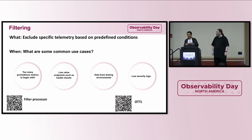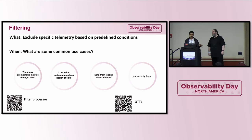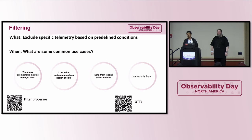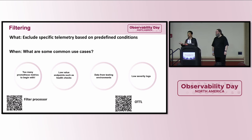As you look at all these specific use cases, we've linked out to some of the components you can use. Feel free to point to the filter processor, for example, which you can use within the collector. You can use it based on the OpenTelemetry Transformation Language — OTTL. It's great because you can use existing OTTL statements, which call functions based on OTTL grammar, allowing you to make full advantage of these processing capabilities.